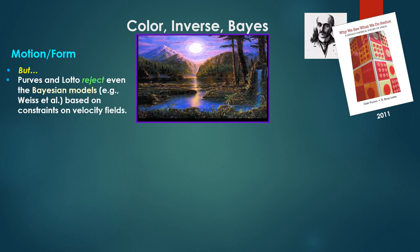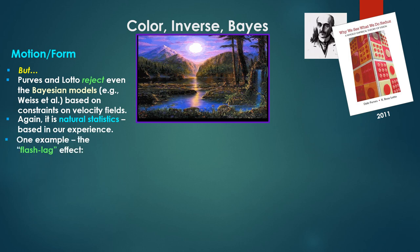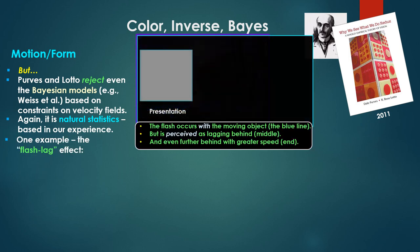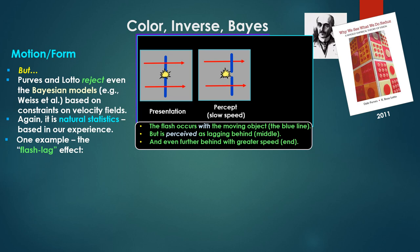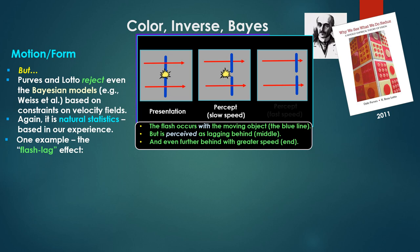But Purvis and Lotto, and this is their other book, 2011, why we see what we do redux, they reject even the Bayesian models, for example Weiss et al., based on constraints on velocity fields. Again it is natural statistics based on our experience. One example, the flash lag effect. Here we have that blue line or the blue object moving in a certain motion, and then we present a flash precisely in line with that object. However, what we perceive at slow speed of that blue object is the flash lagging behind. And as the object speeds up with greater speed, it would lag even further behind. Why is that?